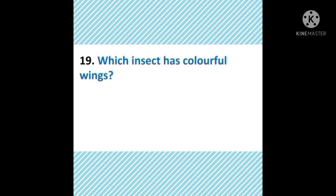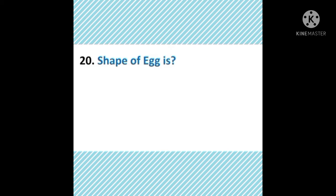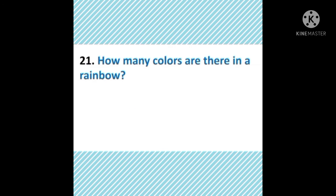Which insect has colorful wings? ऐसा कौन सा insect है जिसके wings colorful होते हैं? The answer is butterfly. B-U-T-T-E-R-F-L-Y. Butterfly — तितली — एक ऐसा insect है जिसके colorful wings होते हैं. Shape of egg is — egg का shape oval होता है।